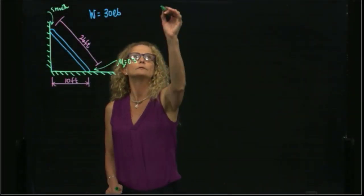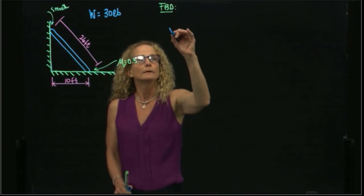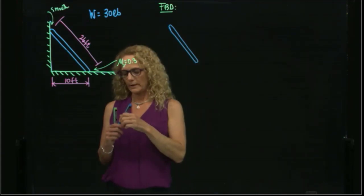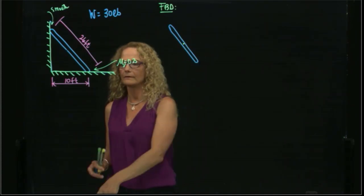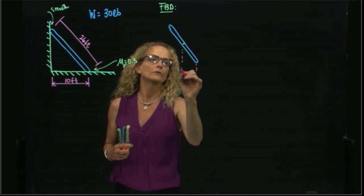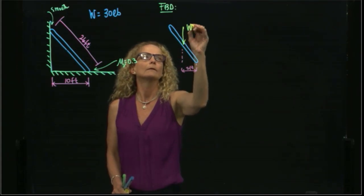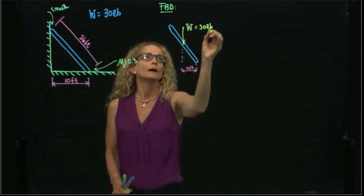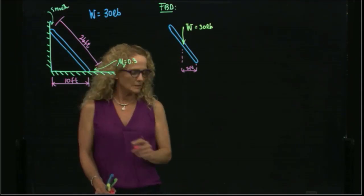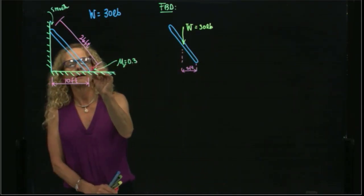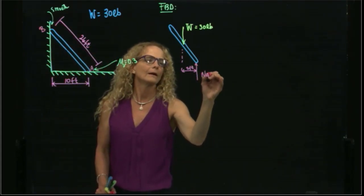The first thing we are going to do is draw our free body diagram of the bar. We have the weight in the center of the bar, so this distance will be equal to 5 because it is in the center of that bar. The weight is 30 pounds, and this is my active force. Then I have the reactive forces. Let me name this bar: this point is A and this point is B.